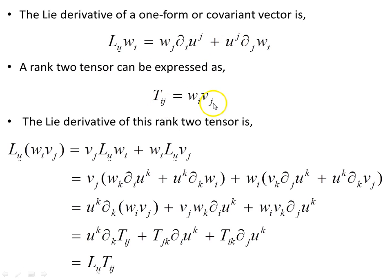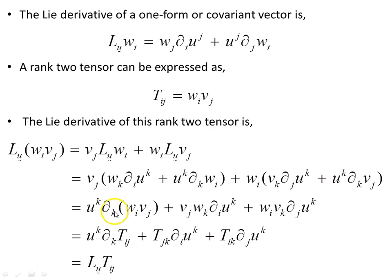Taking the terms with u^k in front and expressing them as the partial derivative of their product, the four-term line reduces to three terms. Replacing w_i * v_j with the rank-2 tensor component all the way along gives us the Lie derivative for a rank-2 tensor covariant in both indices. This means the Lie derivative of the metric tensor g_ij is obtained by replacing the previous tensor with g_ij.